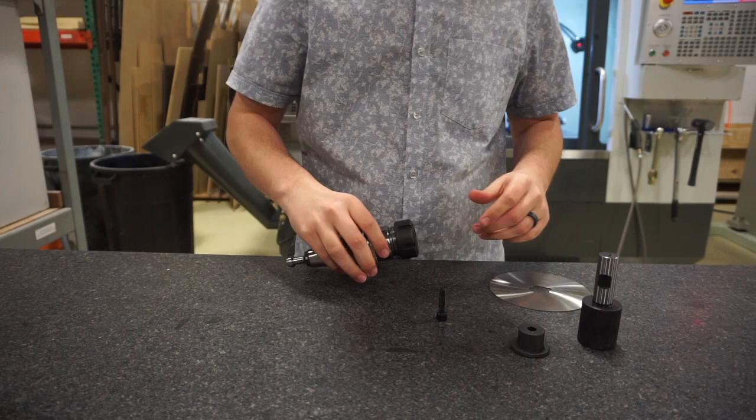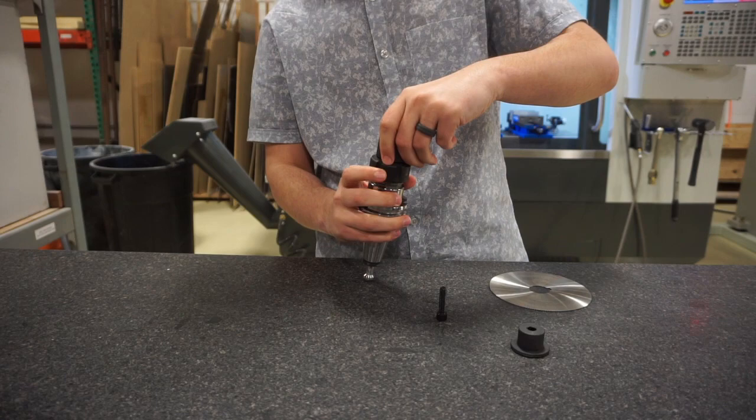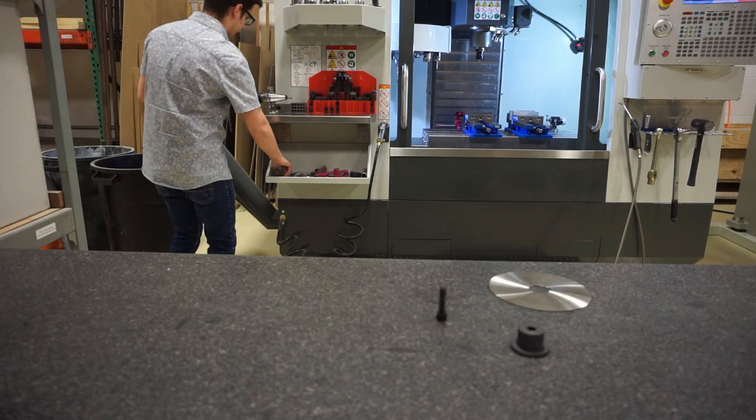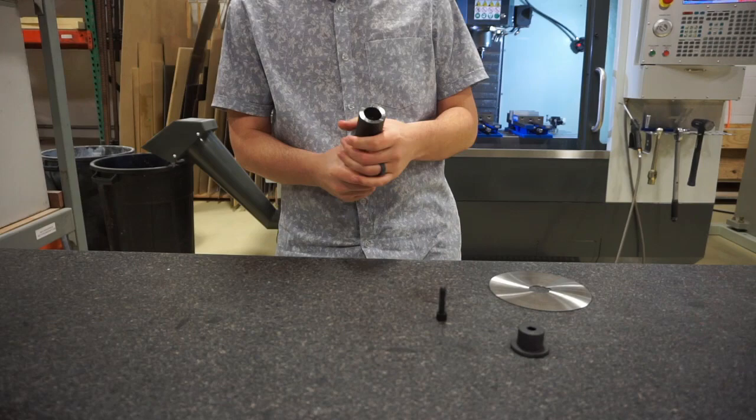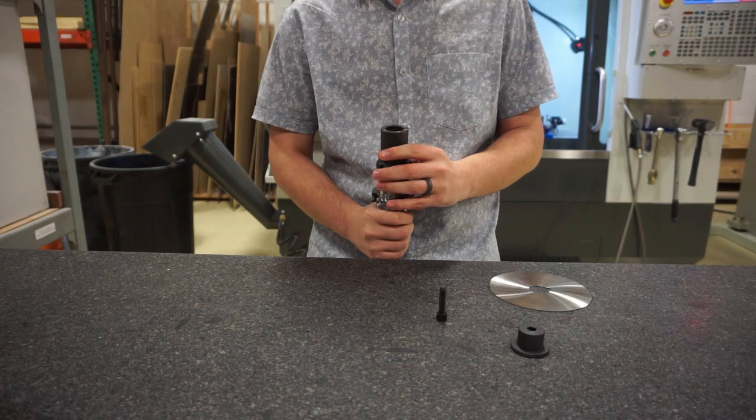So we've assembled our ER collet holder, we'll then go on to our arbor. We'll quickly just go tighten this down. You'll want to torque this collet down to whatever the recommended torque spec is from your manufacturer of your holder. I'm normally not a huge fan of ER collet holders for this type of application. I like hydraulic much more, but this is what we have available for this process and it'll work just fine.